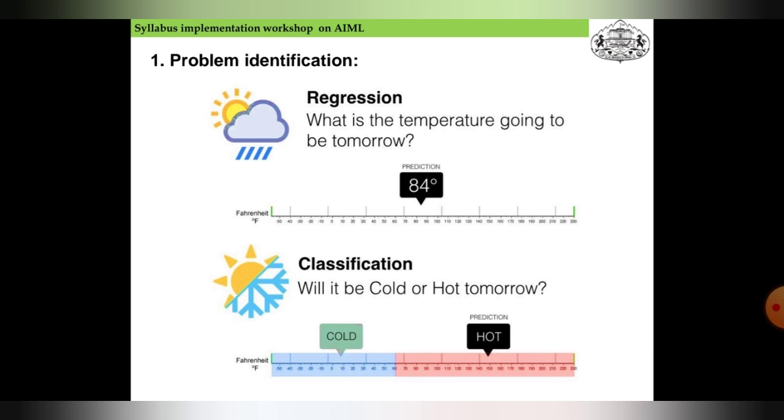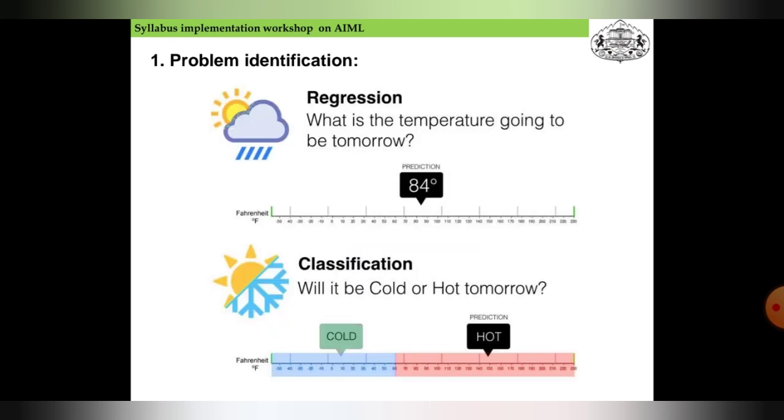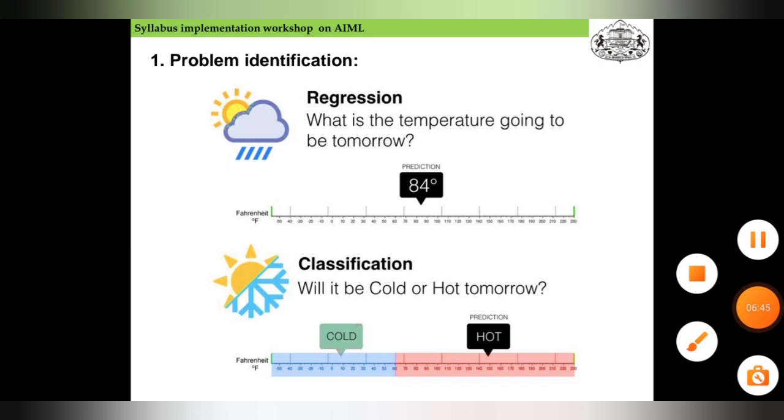For classification: will it be cold or hot tomorrow? Regression is predicting what the temperature will be tomorrow. Classification will just classify on the basis of the label whether it's cold or hot. This is how these two methods can be compared to each other.